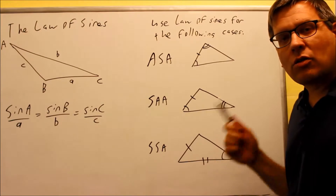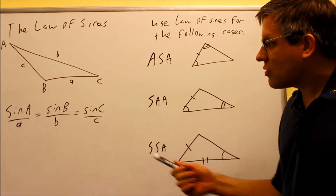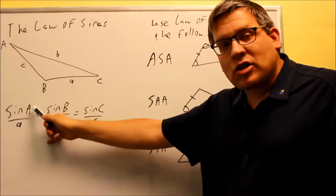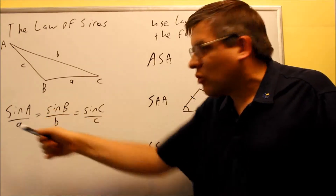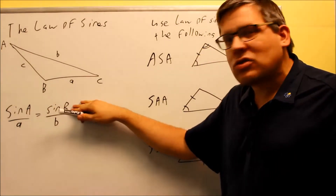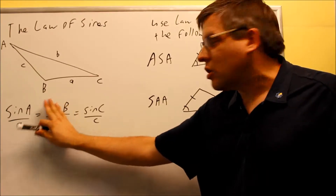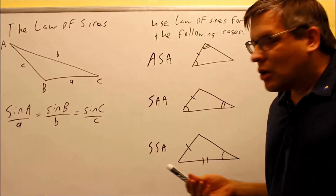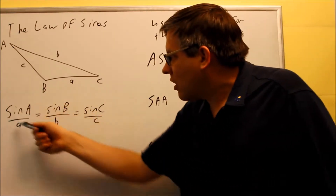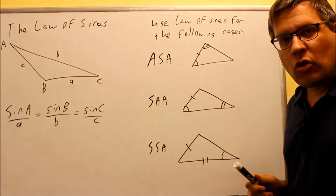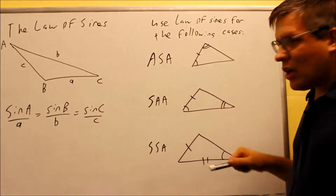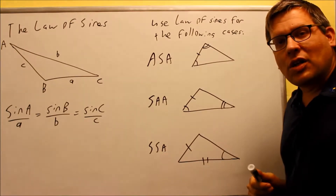These angles do not have to be 90-degree angles — they can be any kind of angle. That's why it's important that you have a side across from a given angle, because you have to start with a known ratio. You can set it equal to one of the other ratios. You'll typically use only two of these at a time, but you must have a known ratio first in order to set up your equation.